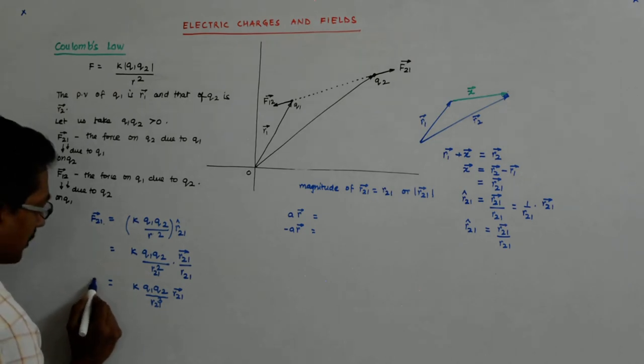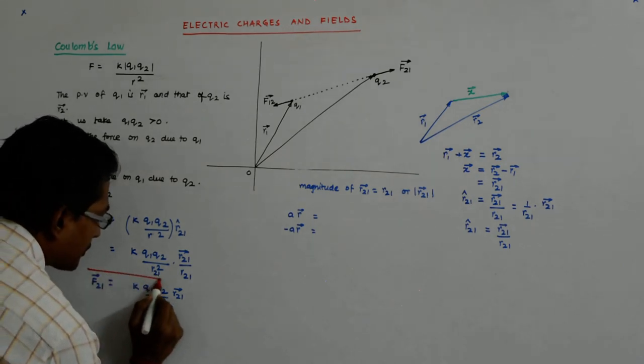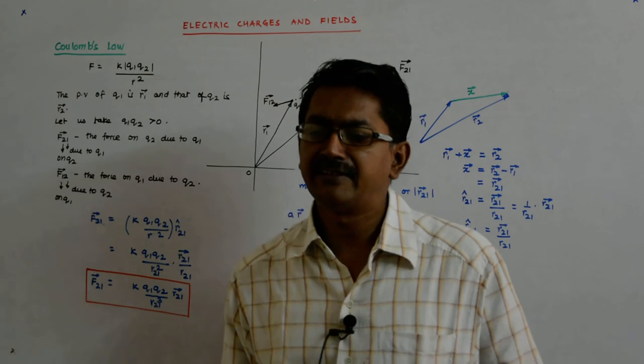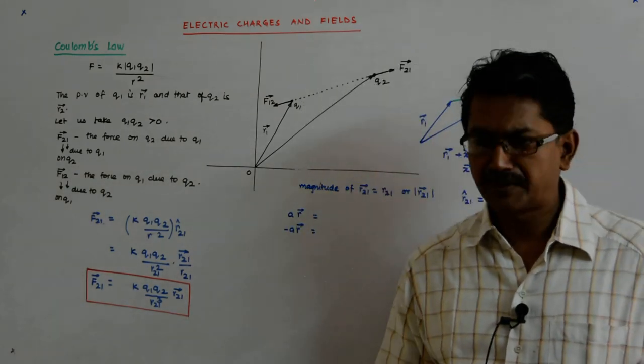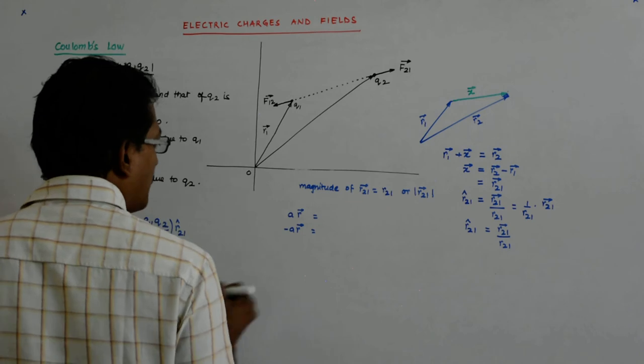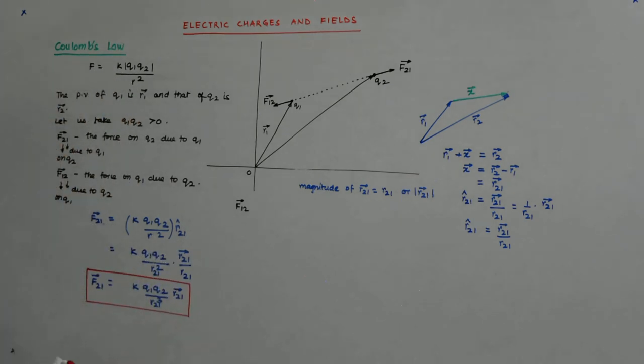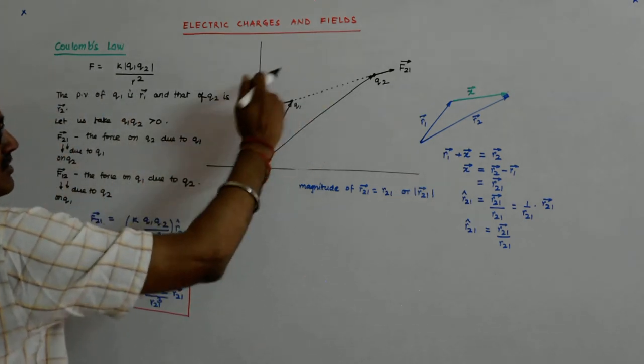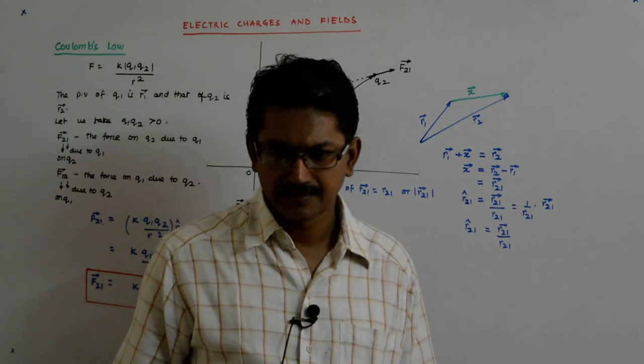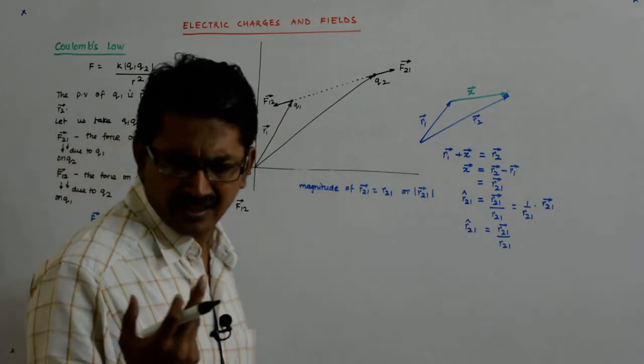So this becomes my equation, the vector equation of Coulomb's law. Pretty simple. It has all the information. Now how about F12? F12 is in this direction, it is opposite to the vector R21.